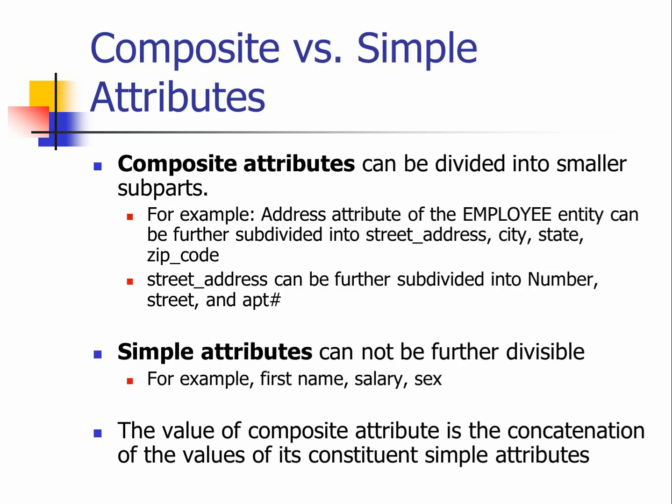First, composite versus simple attributes. Composite attributes can be further divided into smaller parts. The best example is address — your address consists of street name, street number, city, state, and zip code, sometimes even an apartment number. So one attribute, address, can be further divided into smaller sub-parts. When this type of attribute describes an entity, we call it a composite attribute.